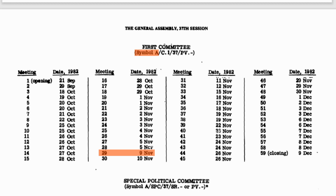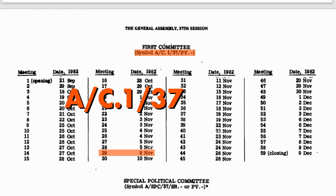At the top, we can also get the base structure of the document symbol. And so the document we're looking for is A-C1-37-PV29.